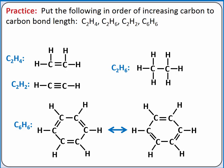This means the actual structure of benzene has six identical carbon-carbon bonds somewhere between a single and double bond. If we put these in order of increasing bond length, our shortest bond is also our strongest bond. The triple bond in C2H2 should be our shortest and strongest bond. Next should be our double bond in C2H4.